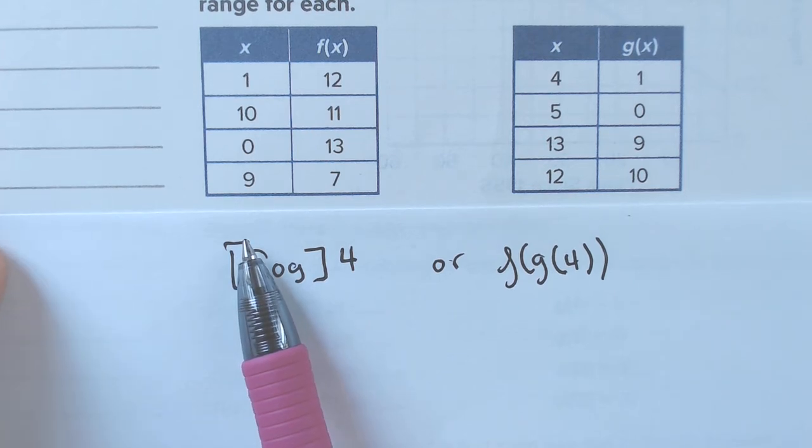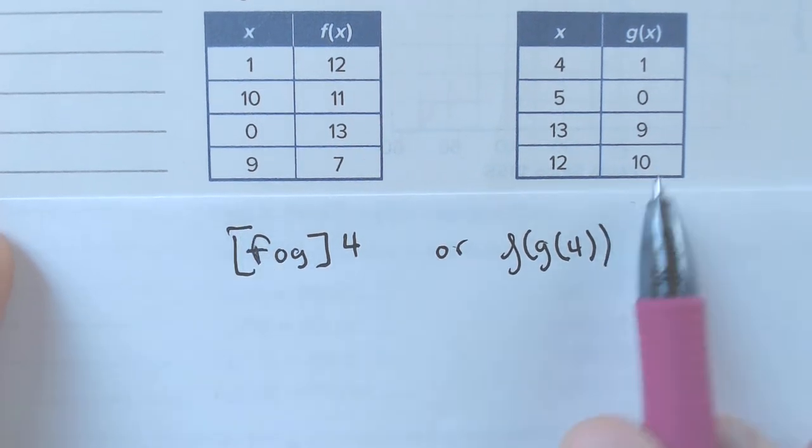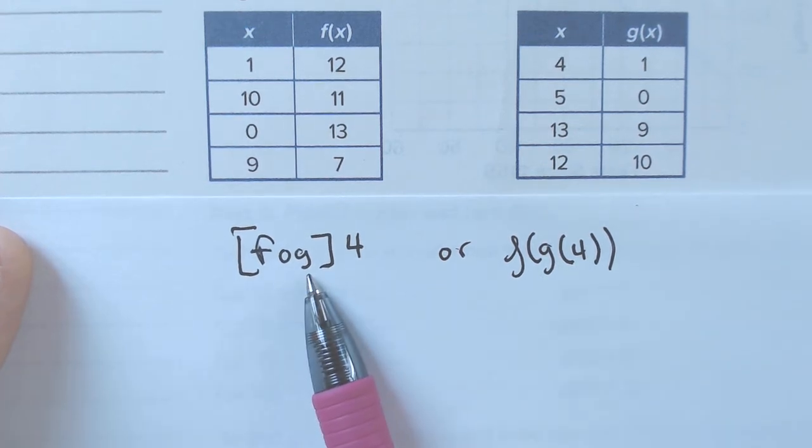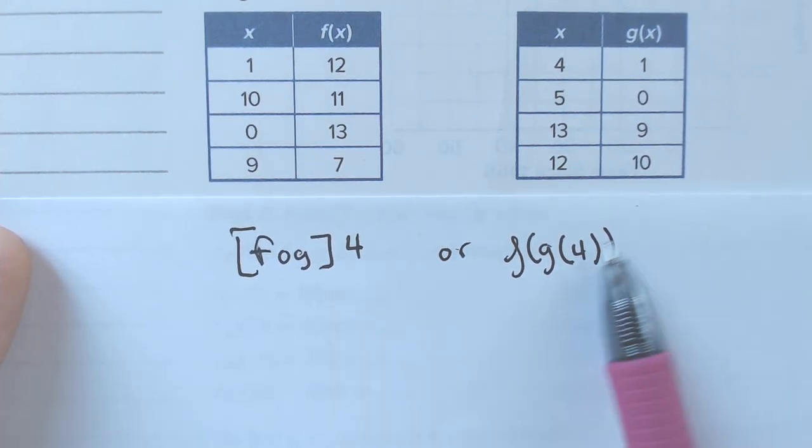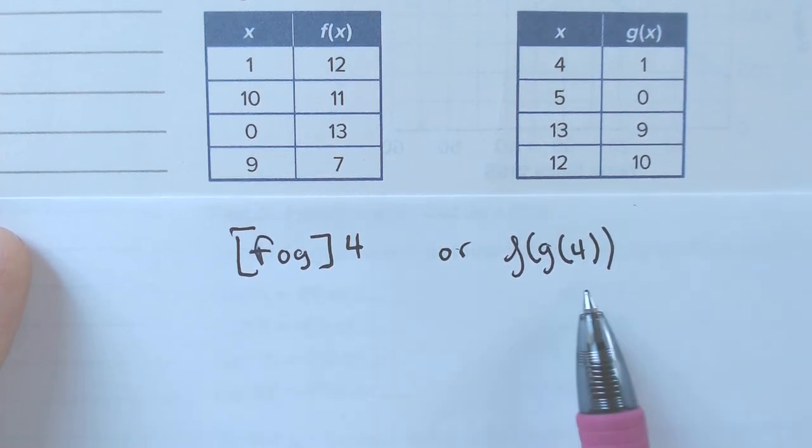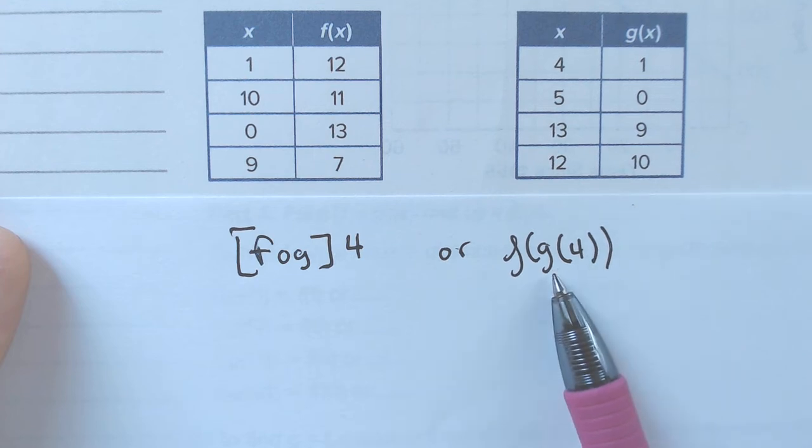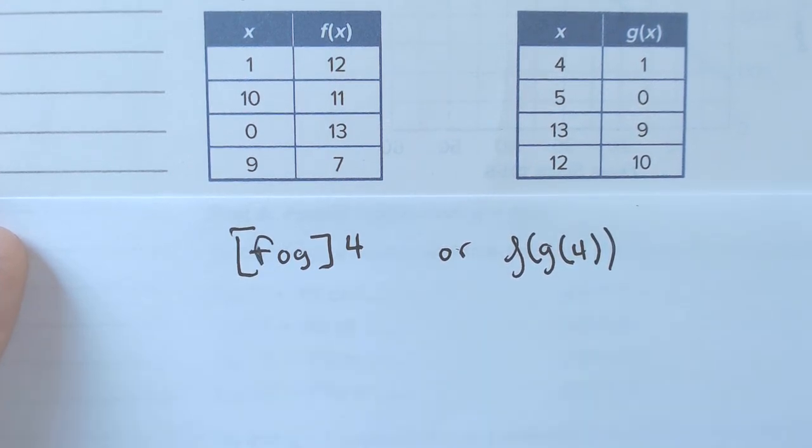Okay? So, when you have a table, as we do here, if it's saying f of g of 4, which is the same thing as fog of 4 here, both of these mean the same thing, that means that you need to plug in 4 into the g of x function, get a value, and then plug that into the f of x function. Well, the functions are tables.